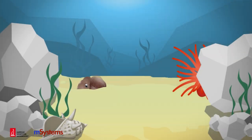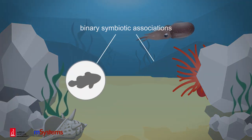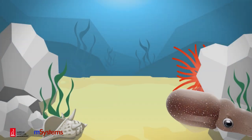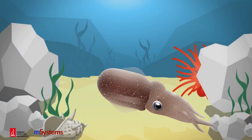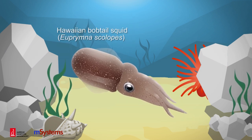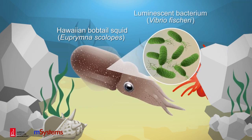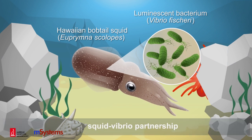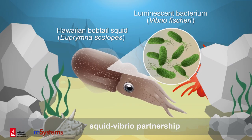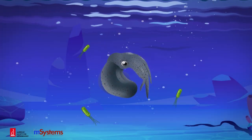Naturally occurring binary symbiotic associations, which involve only two organisms, allow us to examine the molecular mechanisms underlying these symbiotic interactions. In this review, we use the symbiotic partnership between the Hawaiian bobtail squid, Euprimna scolopes, and the luminescent bacterium, Vibrio fischeri, called the squid-Vibrio partnership, as a lens through which to examine the mechanisms of the host-symbiont relationship.